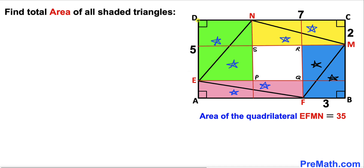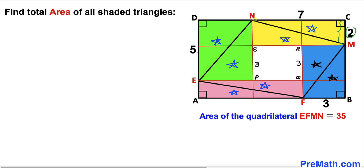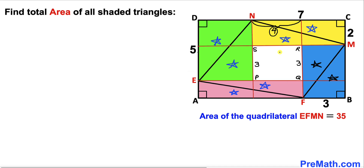We know that the whole length DE is 5 units and length CM is 2 units, so this length is going to be 5 minus 2 equals 3 units, meaning these side lengths are 3 units as well. For the horizontal length: NC is 7 units and FB is 3 units, so this length is 7 minus 3 equals 4 units, and therefore these lengths are 4 units as well.